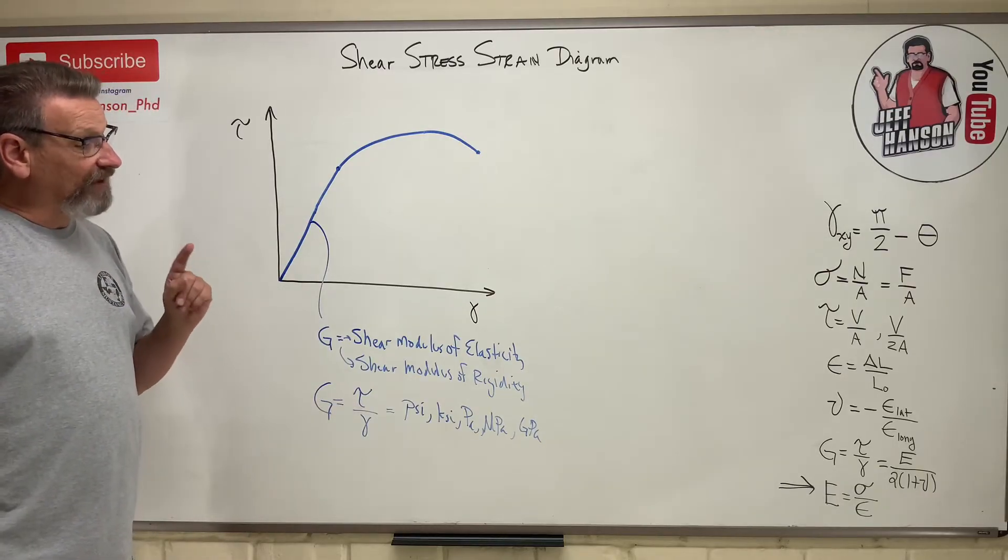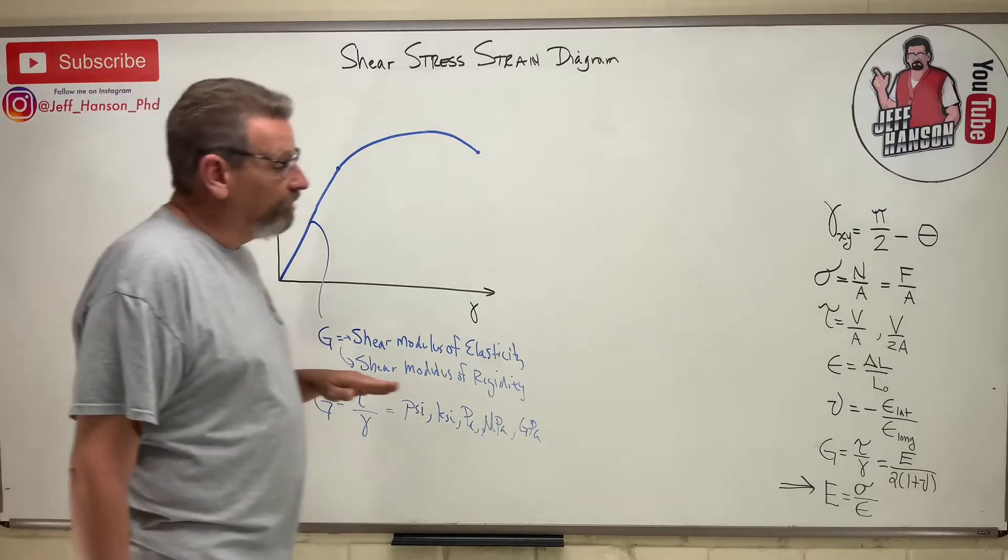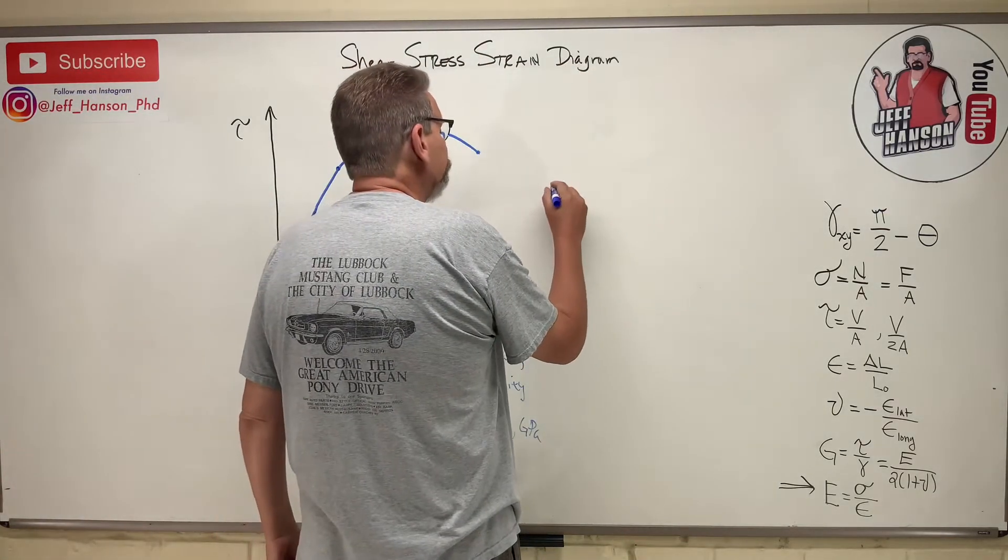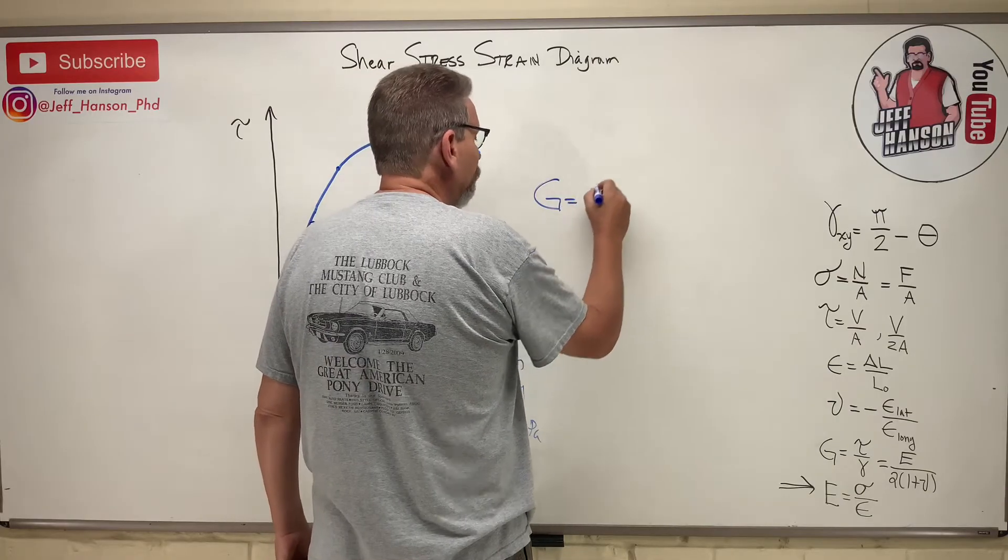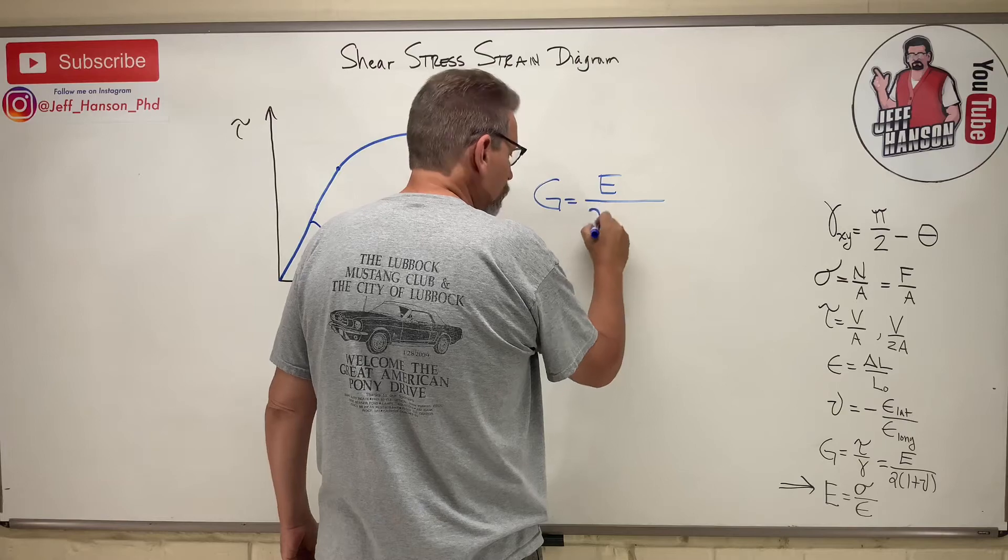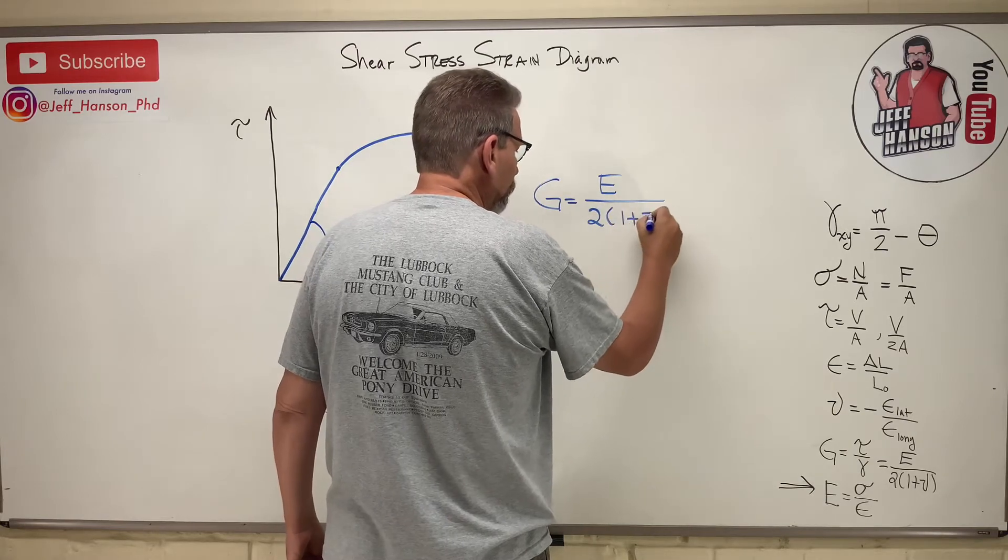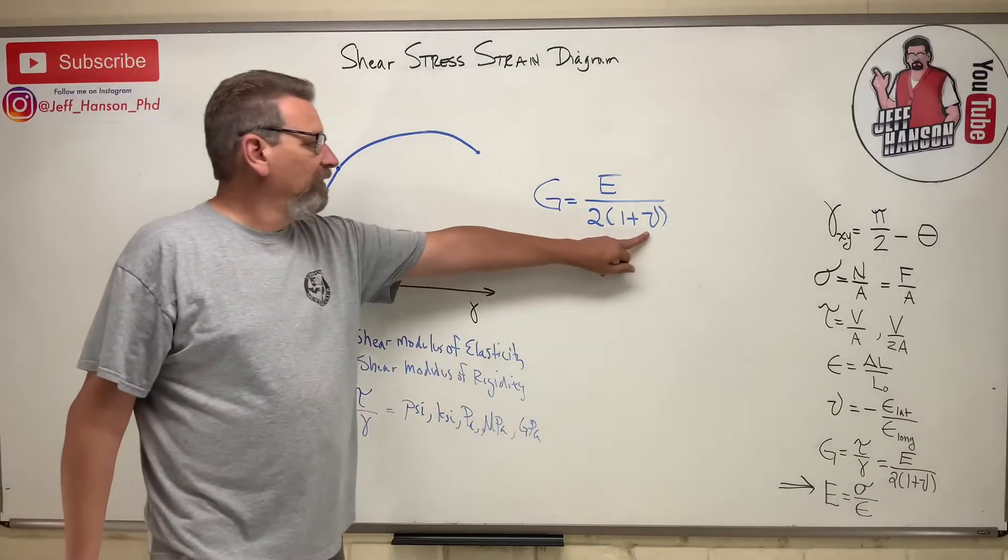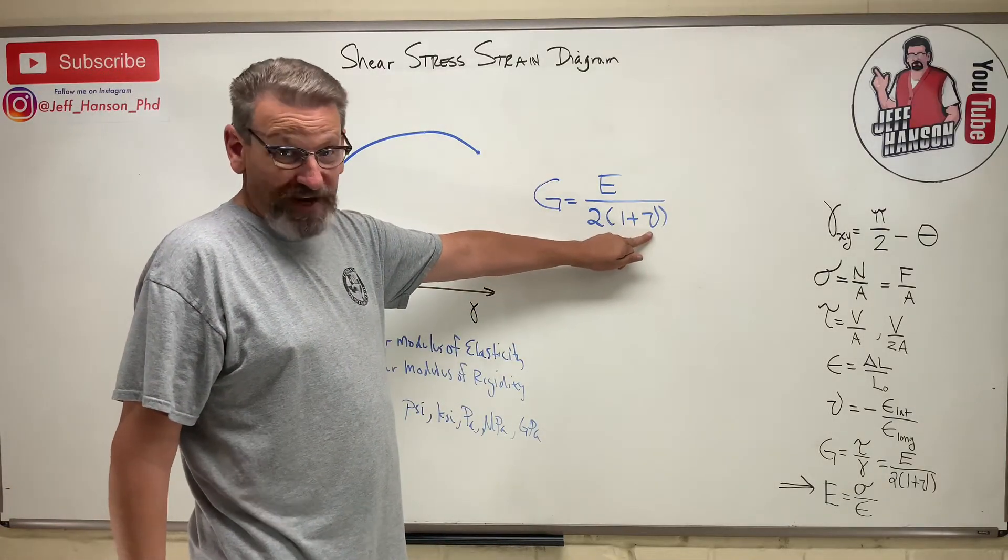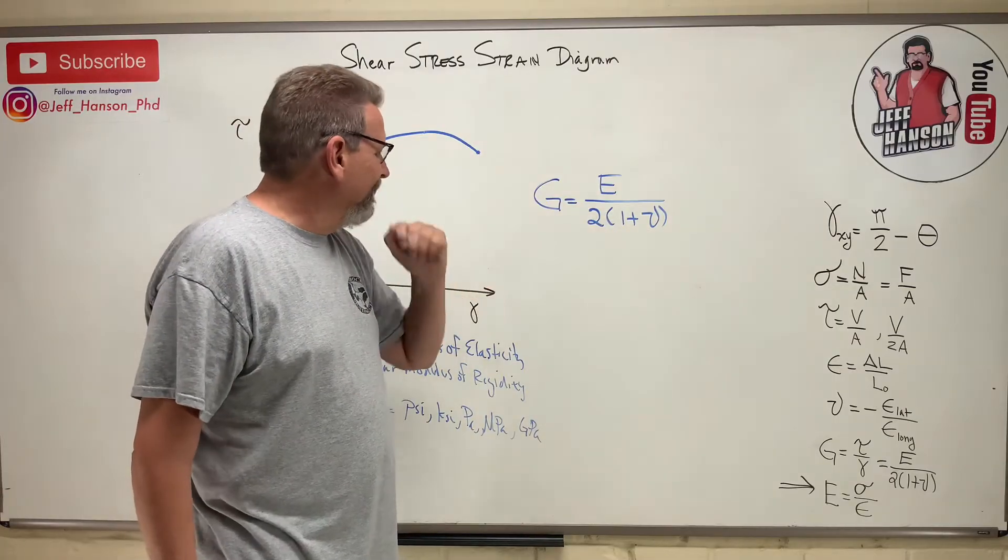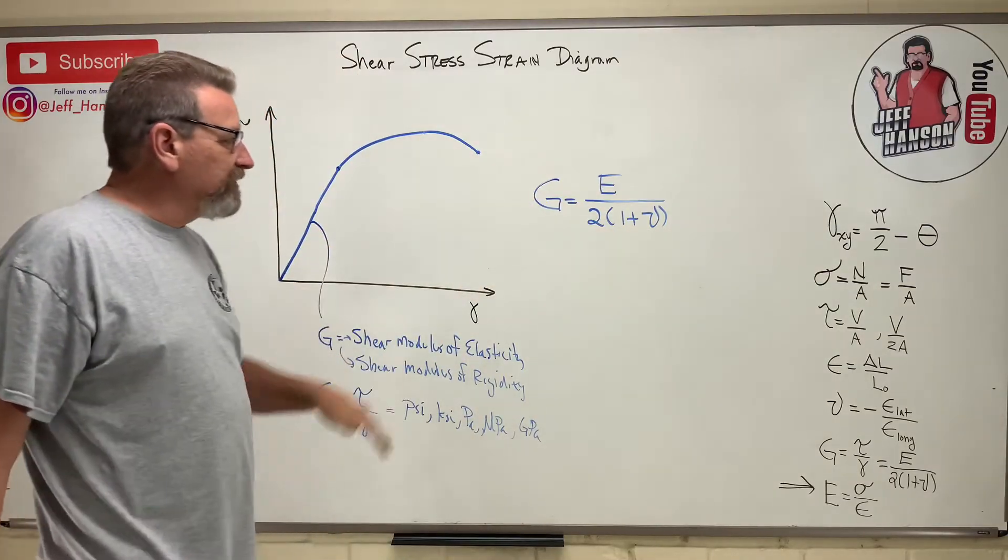Now, one of the things, I have an equation up here, also this equation right here. So where did that come from? G is equal to E divided by 2 times 1 plus nu. What is nu? That's Poisson's ratio. Remember, Poisson's ratio, the Stay Puft Marshmallow rule. So this is another equation to calculate G.